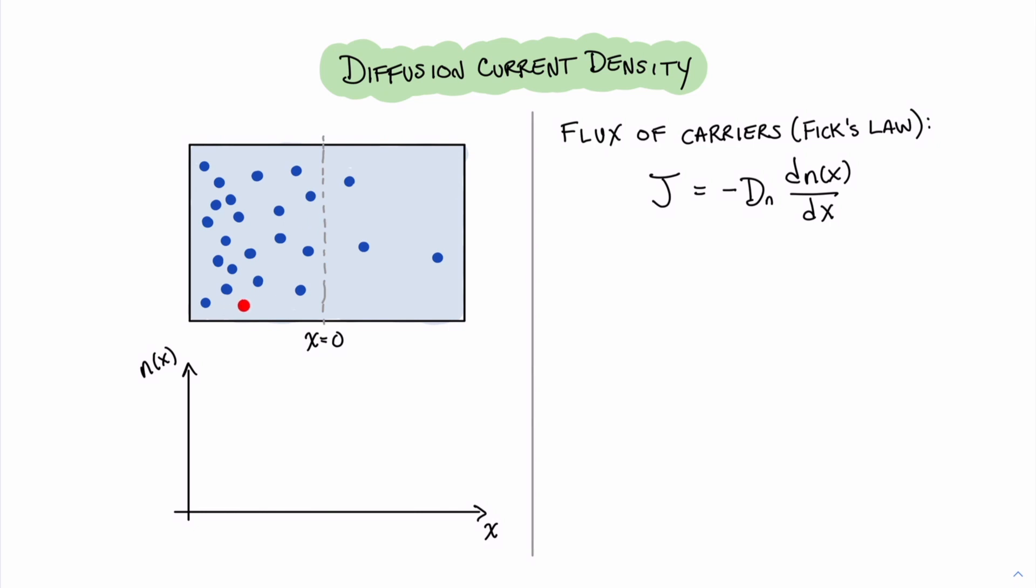There's a couple of different types of distributions of carriers that we want to consider. One is a linear distribution of carriers across the device. The next is an exponential distribution of carriers across the device. These two are very common in semiconductor devices, and it turns out that their mathematical expressions are very convenient. As you can see, in a linear system, the slope is a constant value, whereas in an exponential, taking the derivative of an exponential is the exponential itself plus a few things out in front.